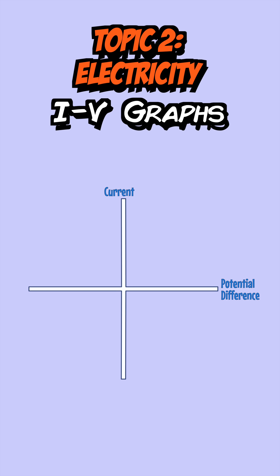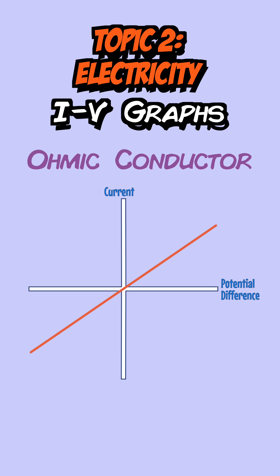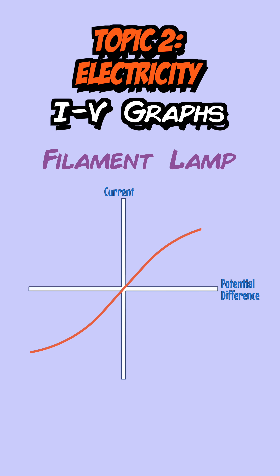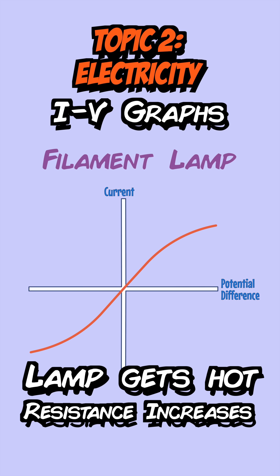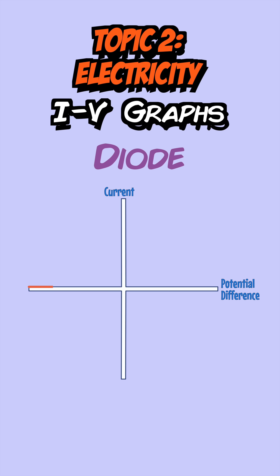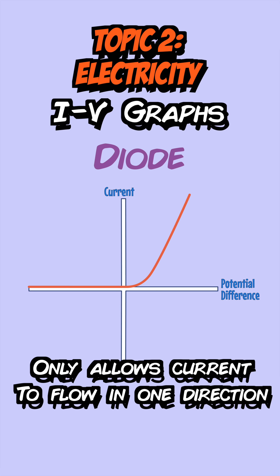Next up, we have IV graphs, which show how current changes with potential difference. The three IV graphs you need to know about are: the ohmic conductor, which is a straight line through the origin; a filament lamp, which has an S-shaped curve as the lamp gets hot and its resistance increases; and a diode, where the current is at zero in the negative axis and goes up in the positive axis, because diodes only allow current to flow in one direction — the positive direction.